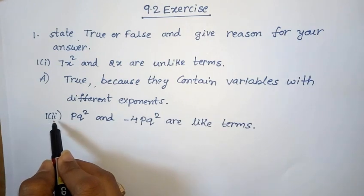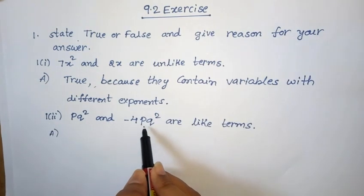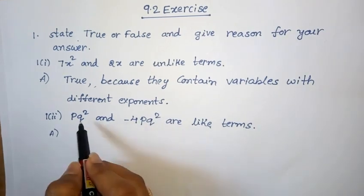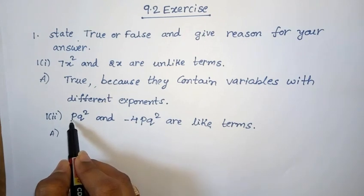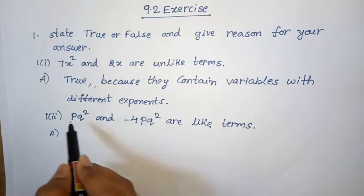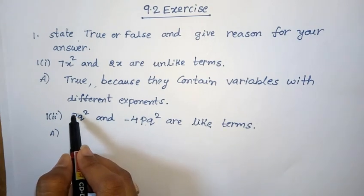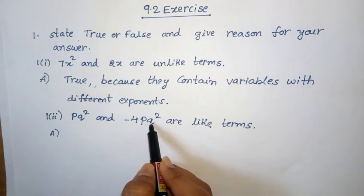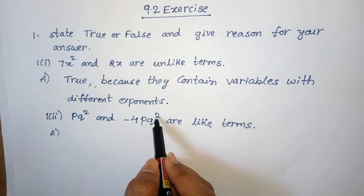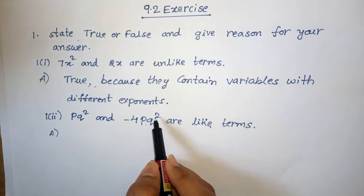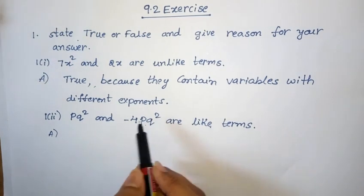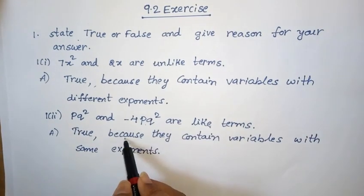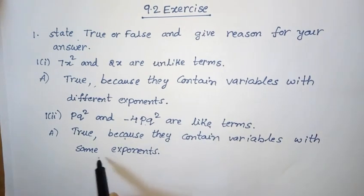Next, 1st Roman, 2nd one: pq squared and minus 4pq squared are like terms. Like terms means same variables and same exponents. Here pq are the variables. p exponent is 1 in both terms, and q exponent is 2 in both terms. Same variables and same exponents, so they are called like terms. Answer is true, because they contain variables with same exponents.